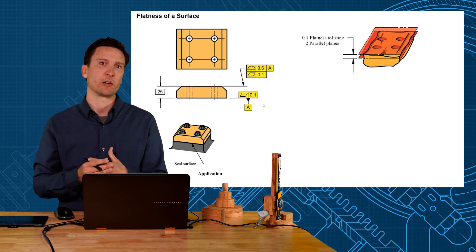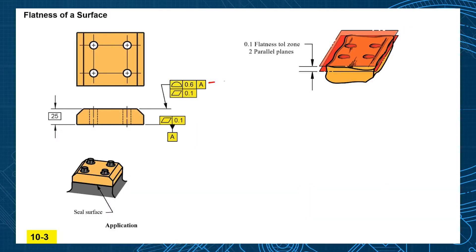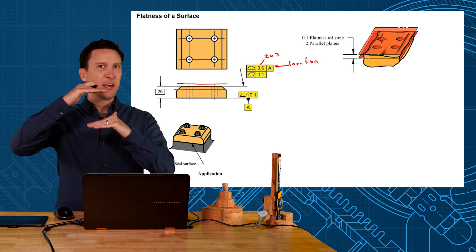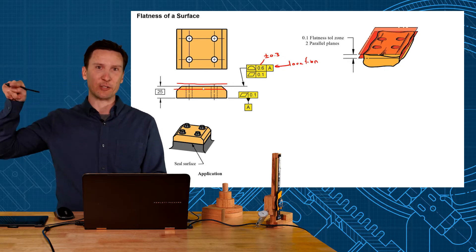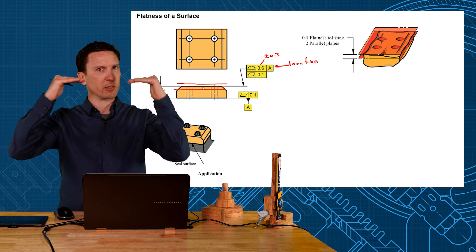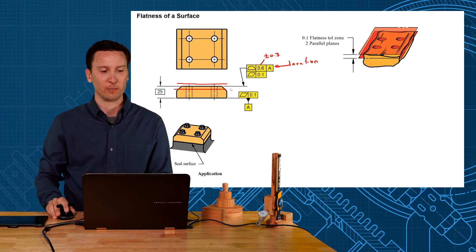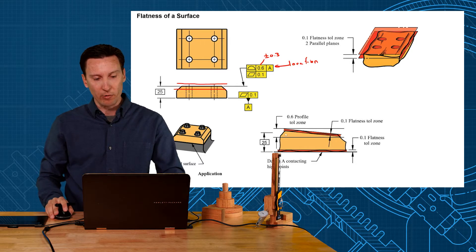Another place that we use flatness tolerance is as a refinement of your profile tolerance. Your profile tolerance is location. That controls where that surface can be relative to your datum A, controls how tall and how short it can be within that plus or minus 0.3. The problem with a big profile tolerance is that also allows the flatness tolerance to be within that 0.6. So you might say I don't care if you cut it high or you cut it low or cut it crooked but make sure you cut it flat when you cut that surface.